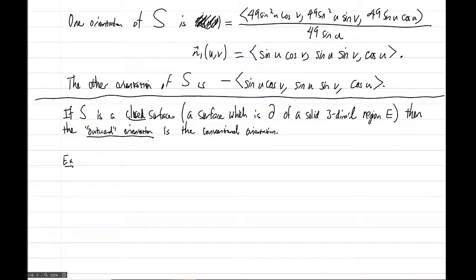So we'll just get rid of the name n of u comma v. And then for the second one here, sorry for kind of running out of room, let's call this one n sub 2 of u comma v. So what we have is n sub 2 is just negative of n sub 1, and both of these are orientations.